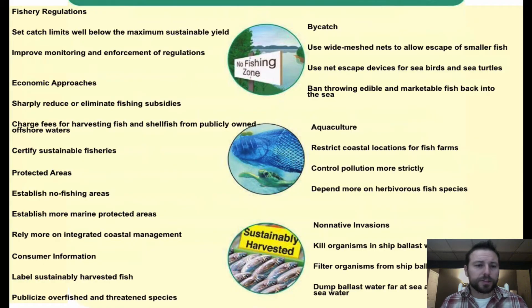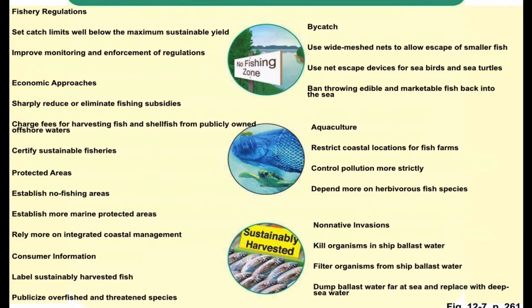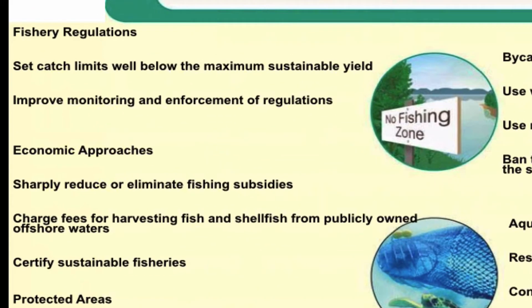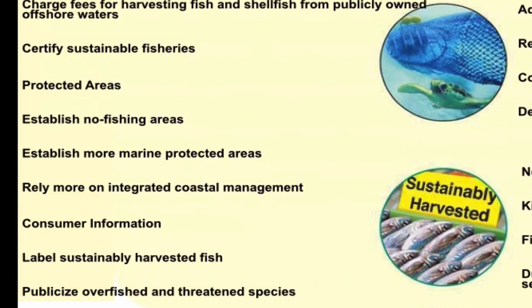Fishing regulations, setting catch limits — we see those employed all along the East Coast and really just about anywhere in the United States. Monitoring of fish populations to see where they're at, and economic approaches such as reducing fishing subsidies and certifying sustainable fisheries — looking at where fish are coming from, making sure populations are in good standing, and letting consumers know their fish is coming from an area expected to be thriving for a while. We also protect areas with those marine reserves.